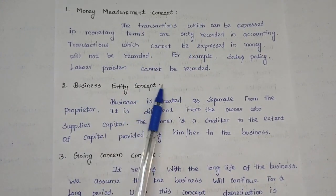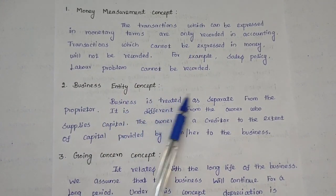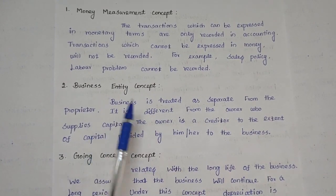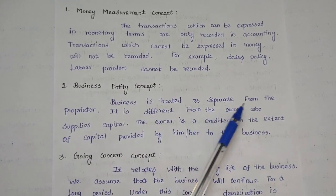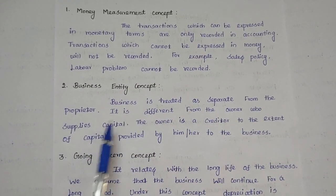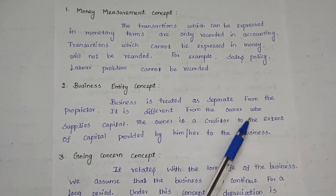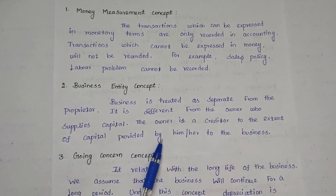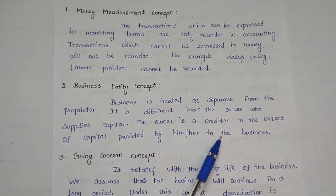The second concept is the business entity concept. Under this concept, the business is treated as separate from the proprietor. It is different from the owner who supplied the capital. The owner is a creditor to the extent of the capital provided by him to the business.